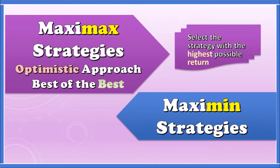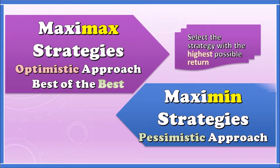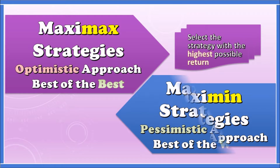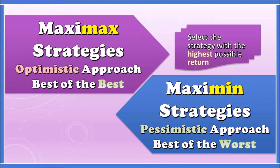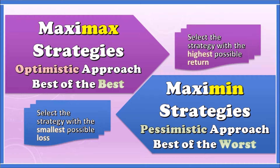Inversely, we have something known as maxi-min. This one is known as the pessimistic approach — the best of the worst. You select the worst payoff in every case, setting a lower bound, and then you maximize that worst payoff. In simple layman's terms, it's the strategy with the smallest possible loss — you kind of have a lower bound and an upper bound in this case.